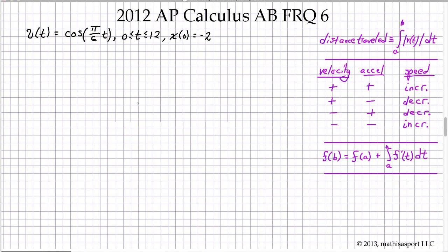So here we have a function that describes a particle's motion as it goes from left to right along the x-axis. Time interval 0 to 12, and we're given one point in a particular time where the particle can be found.